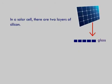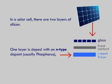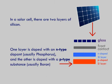In a solar cell, there are two layers of silicon. One layer is doped with an N-type dopant, usually phosphorus, and the other is doped with a P-type substance, usually boron.